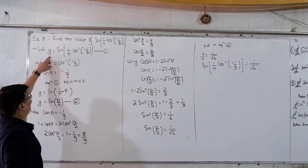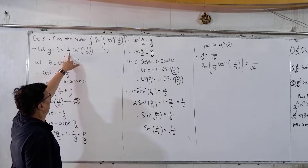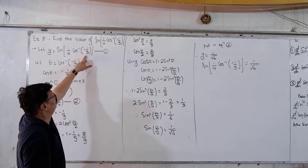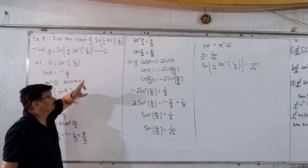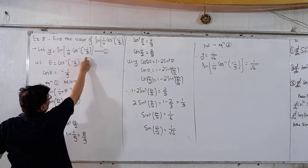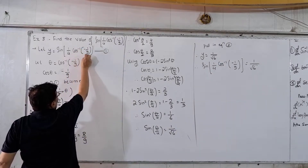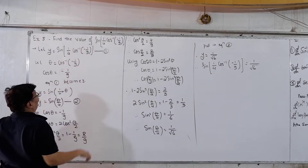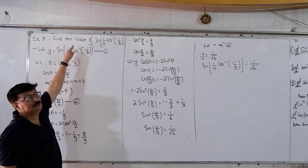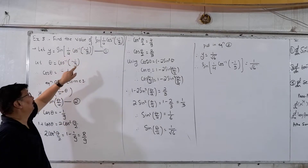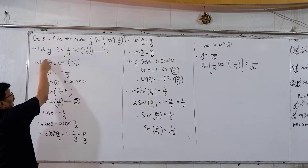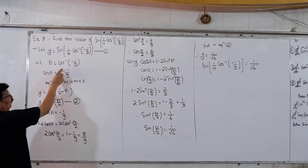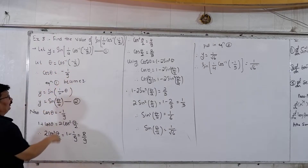Let y = sin(1/4 · cos⁻¹(−1/9)) — call this Equation 1. Now let θ = cos⁻¹(−1/9), so cos θ = −1/9.